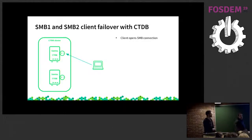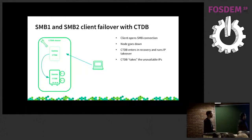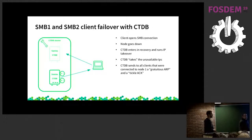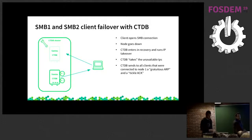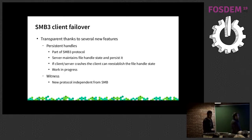In a CTDB cluster, all nodes are active at the same time and IP addresses are distributed between the nodes. The client opens the SMB connection, and when a node goes down, the cluster enters recovery state and runs the IP takeover algorithm, which moves the IP address to another node. After that, CTDB sends a gratuitous ARP to the client to inform about the new MAC address associated with the IP, and also sends a TCL ACK — a crafted TCP packet with a wrong sequence number — which causes the client to automatically reset the connection without waiting for the timeout. In SMB3, Microsoft added new features to provide transparent client failover.